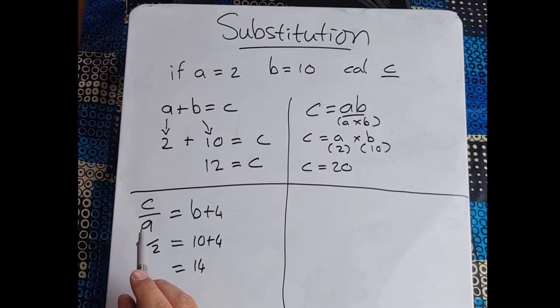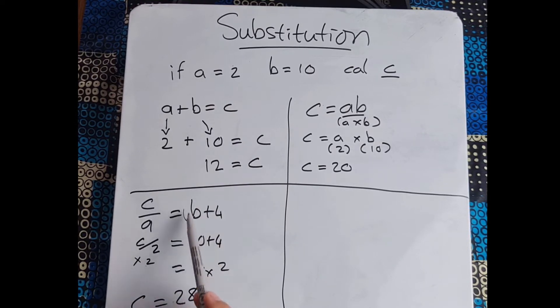Now we know that in order to get rid of our 2 because it's been divided, we need to multiply by 2, and that means we need to multiply by 2 on the other side, which means c is going to be 14 times 2 which is 28. Now again if you want to check this, we know this side is 14, so c is 28, 28 divided by 2 is 14.